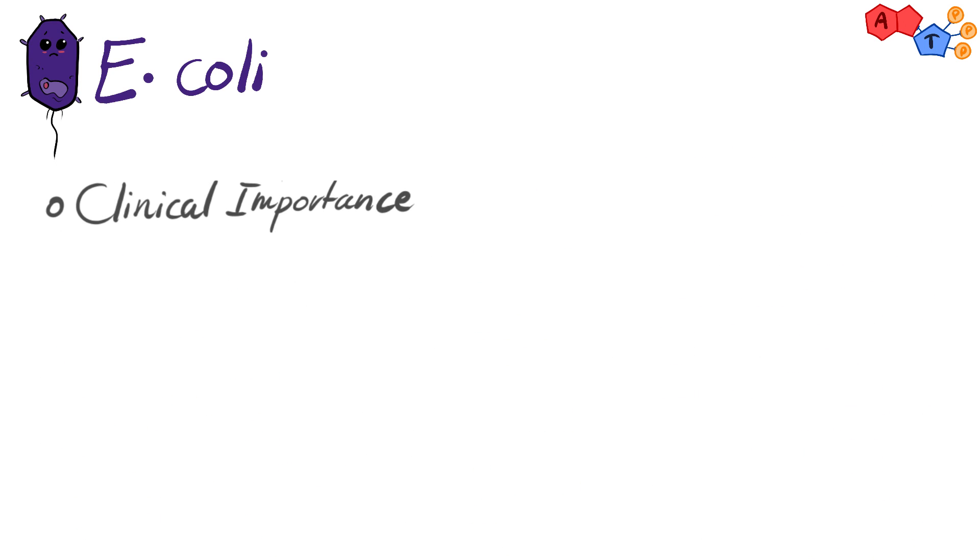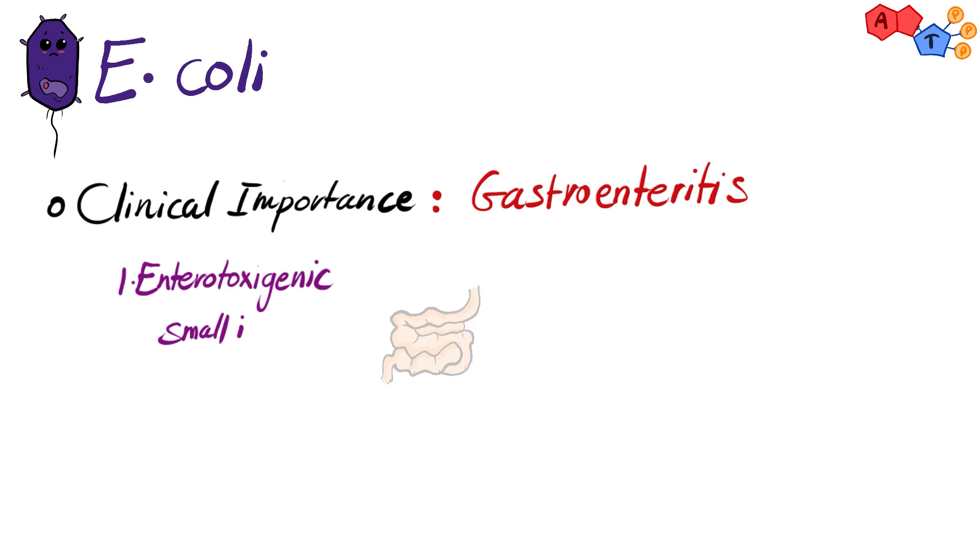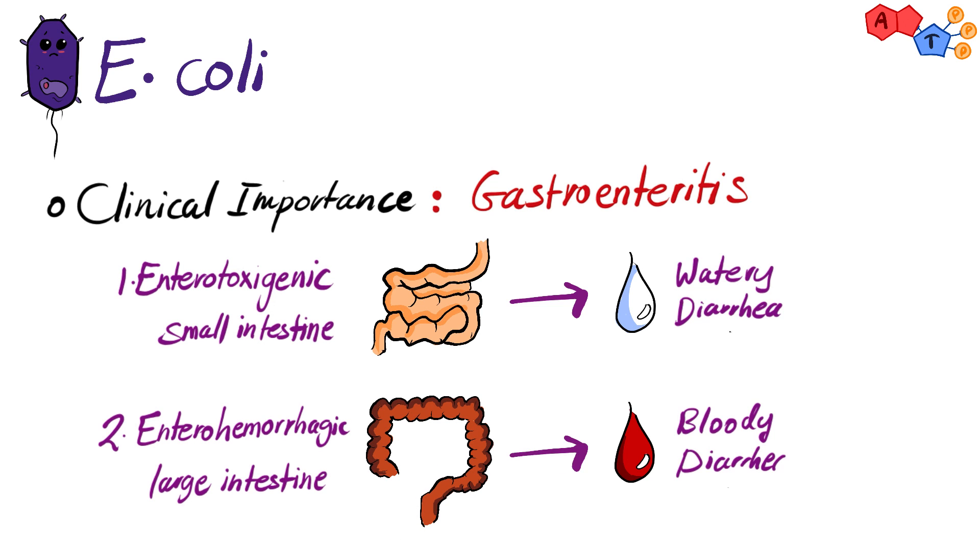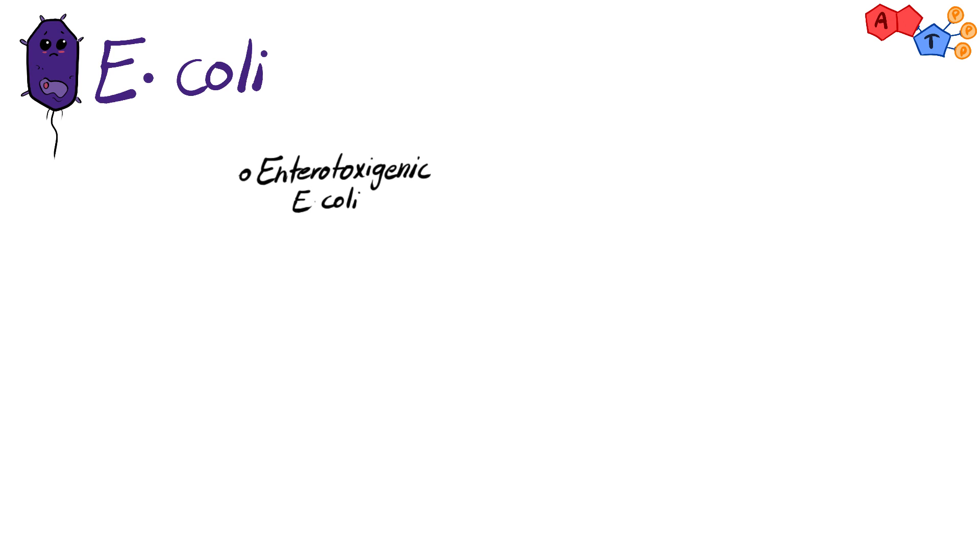The first clinical importance here is gastroenteritis. And we have two main types of E. coli that are particularly important here. The first one is enterotoxigenic E. coli, which affects the small intestine and causes watery diarrhea. And then we have enterohemorrhagic, which affects the large intestine and causes bloody diarrhea.